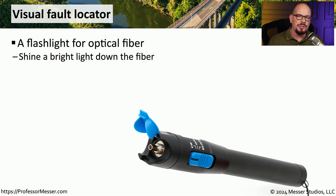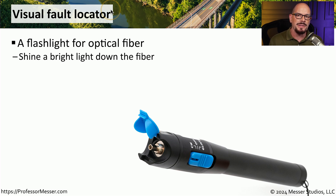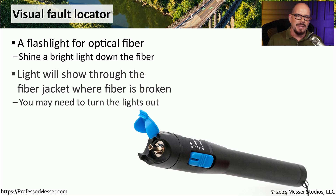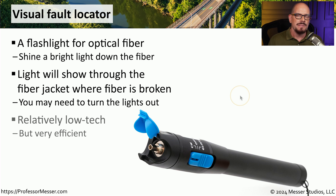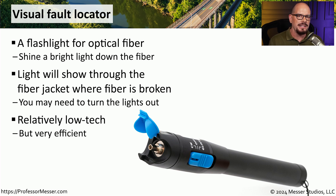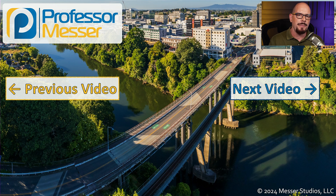If you work a lot with fiber optics, you might be concerned about breaks in the fiber, especially if there are a lot of bends or you're unsure if a particular fiber is in good condition. One way to check this is with a visual fault locator — think of it as a flashlight specifically designed for optical fiber. The light you shine down the fiber can identify any breaks because you'll see the light leaking out from around that break. You may need to turn the lights off in the room to see it better, but it will be very obvious. This is a relatively low-tech device, but it is very effective at finding problems with fiber before you install a patch into your network.